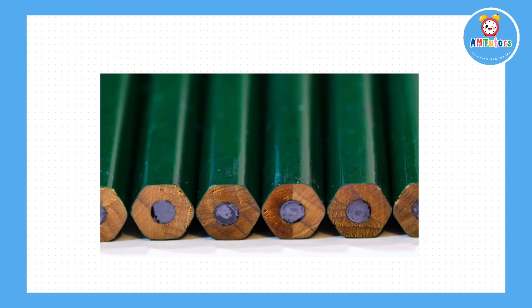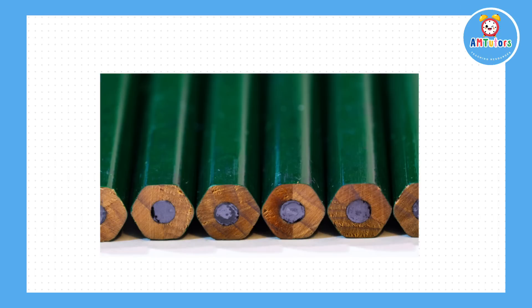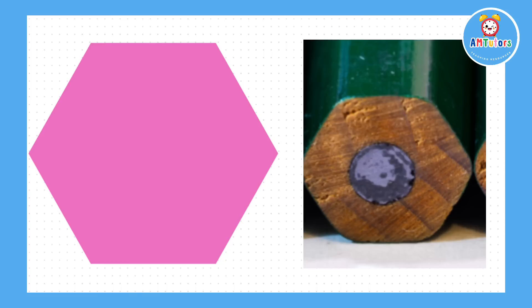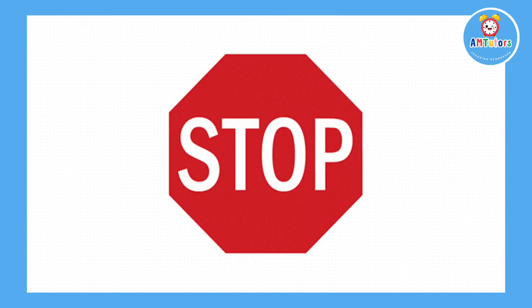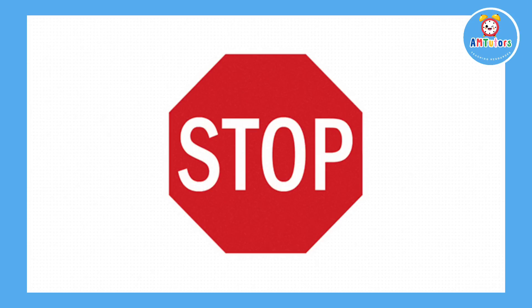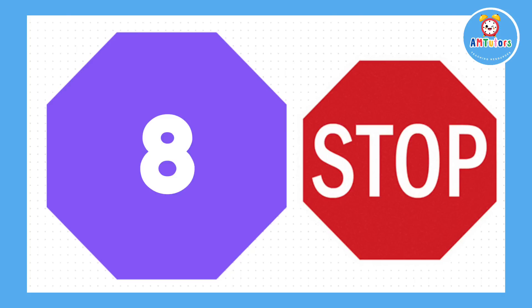Here we can see the end of a wooden pencil. What shape is this and how many edges does it have? The end of a pencil is a hexagon shape and it has six edges. Here we have a picture of a stop sign. What shape is this and how many edges does it have? The stop sign is an octagon shape and it has eight edges.